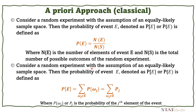Consider a random experiment with an equally likely sample space. Then the probability of event E is defined as the summation of the probability of W_j, where W_j is an element of event E. It equals the summation of the probability of the j-th element of the event.